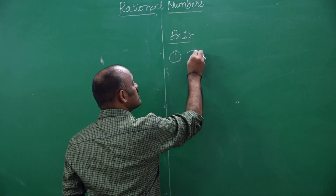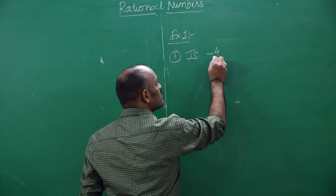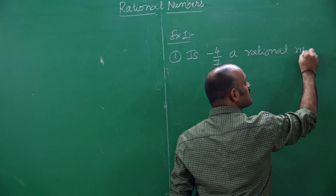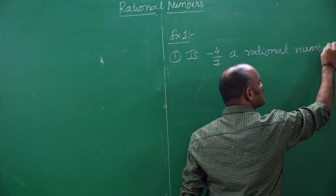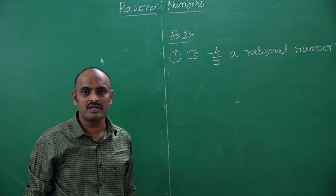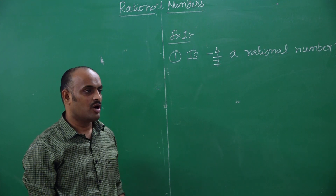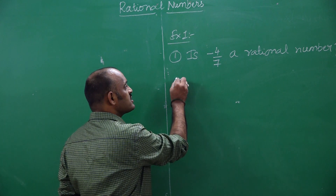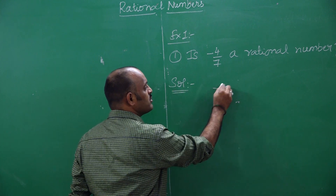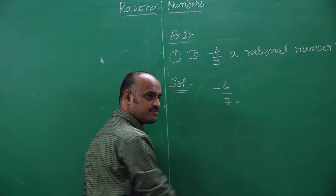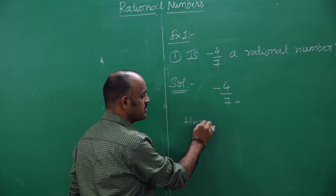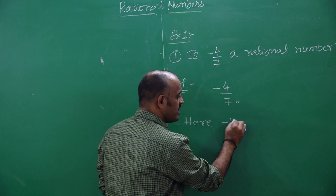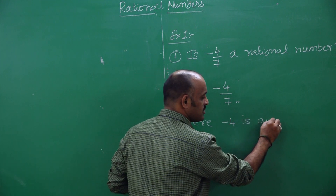First example: is minus 4 by 7 a rational number? So how do we identify whether a given number is a rational number or not? Minus 4 by 7 is given. Here, minus 4 — is it an integer? Yes, minus 4 is an integer.